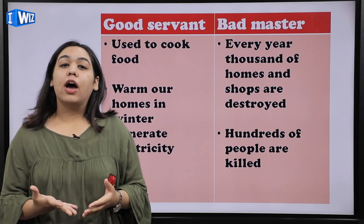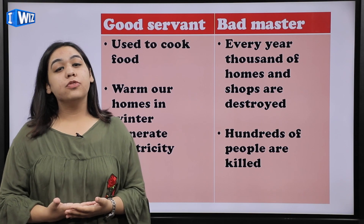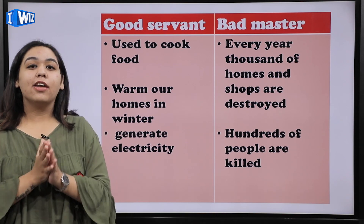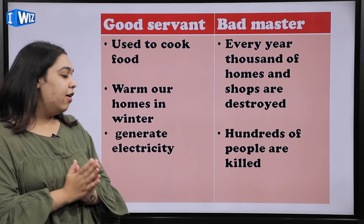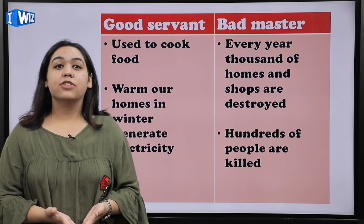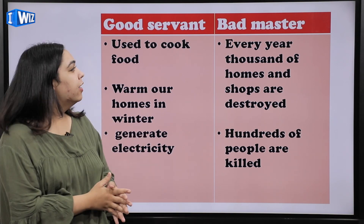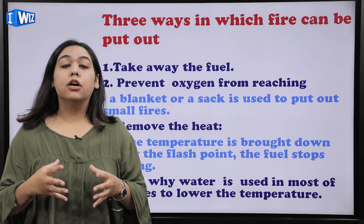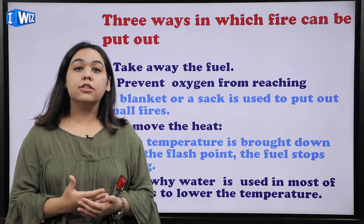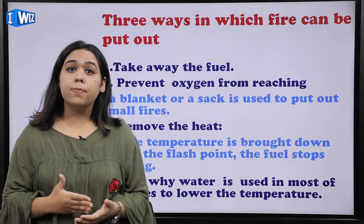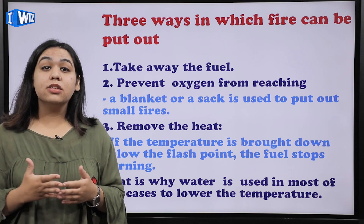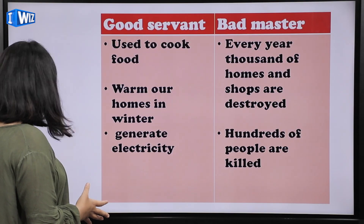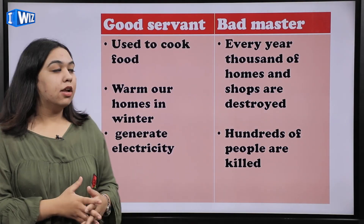When fire is in our control, like in our homes we use fire to cook food; in winters we use fire to warm our homes. That is when fire is in control — it is our friend, and it is also used to generate electricity. That's the controlled usage of fire, that's when fire is actually serving us. But it becomes a bad master when fire mishappenings lead to accidents and a lot of shops and homes are burnt and people are injured — that's when mishappenings lead to fire as a bad master.